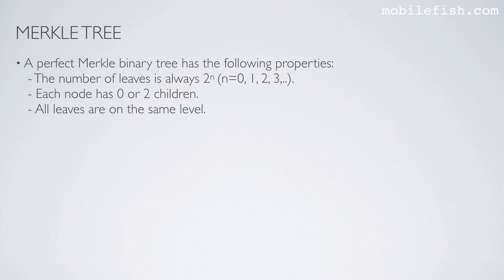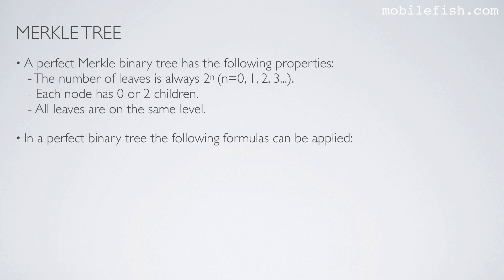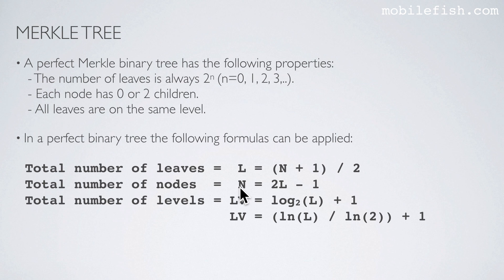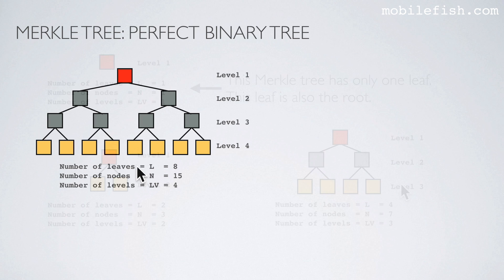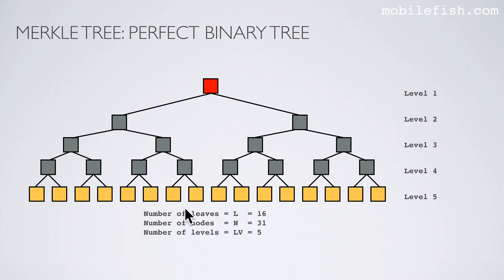A perfect Merkle binary tree has the following properties: the number of leaves is always 2 to the power of n, where n is an integer; each node has 0 or 2 children; and all leaves are on the same level. In a perfect binary tree, L is the number of leaves, n is the number of nodes, and Lv is the total number of levels. If you have 1 leaf, you have 1 node and 1 level — the leaf is also the root. With 2 leaves you get 3 nodes and 2 levels; with 4 leaves, 7 nodes and 3 levels; with 8 leaves, 15 nodes and 4 levels; and with 16 leaves, 31 nodes and 5 levels. As you can see, the number of leaves is always 2 to the power of n.